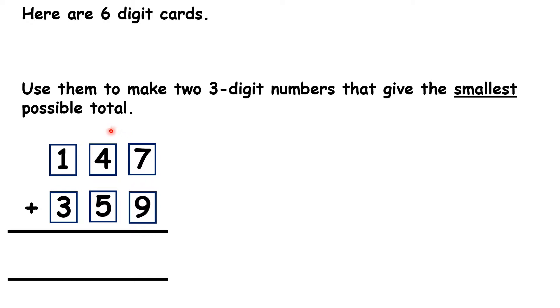Seven plus nine is sixteen. Then one plus four plus five is ten. And one plus one plus three is five. So we have 147 and 359 as our two three digit numbers.